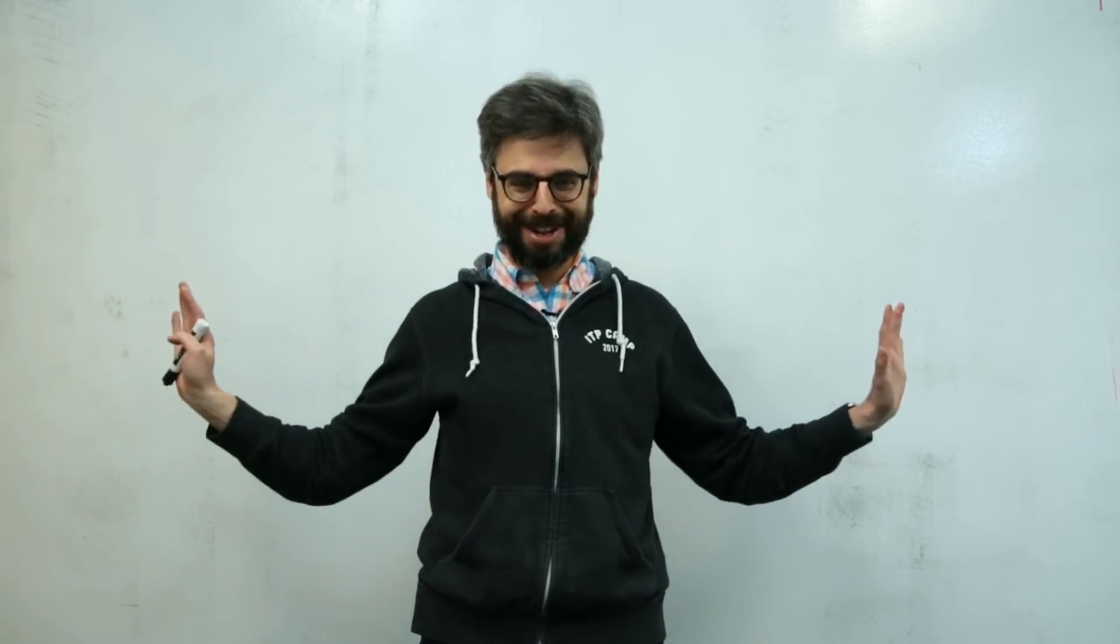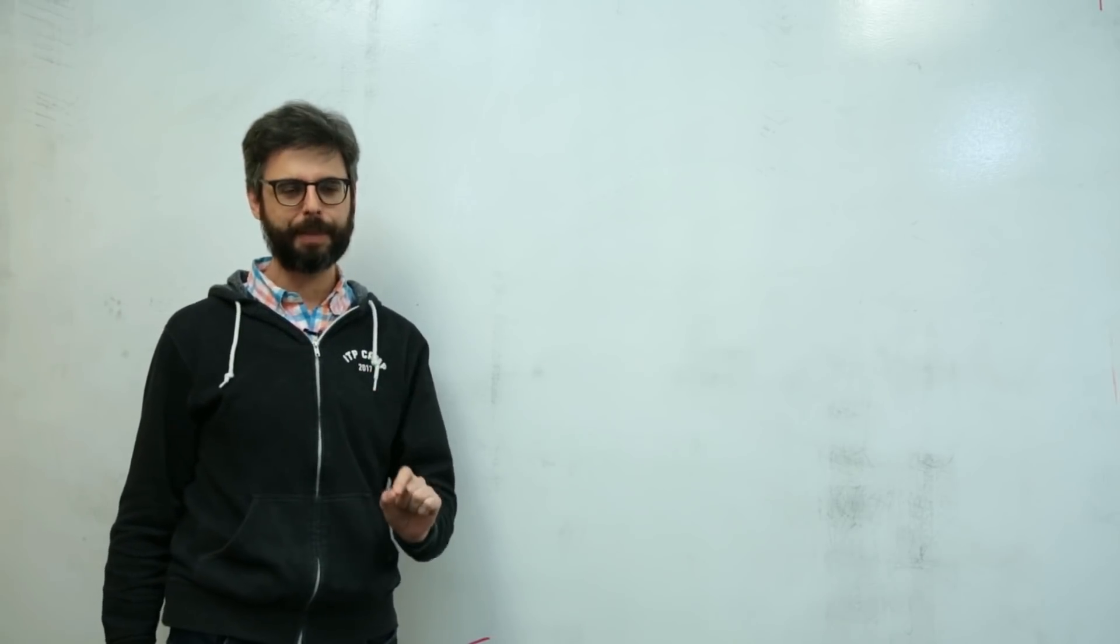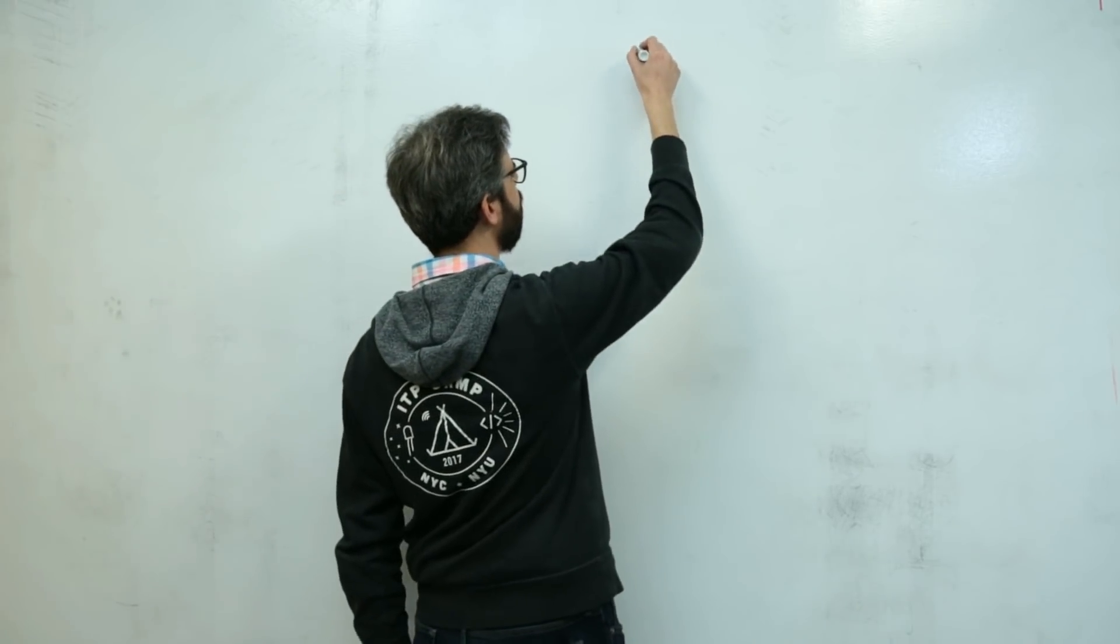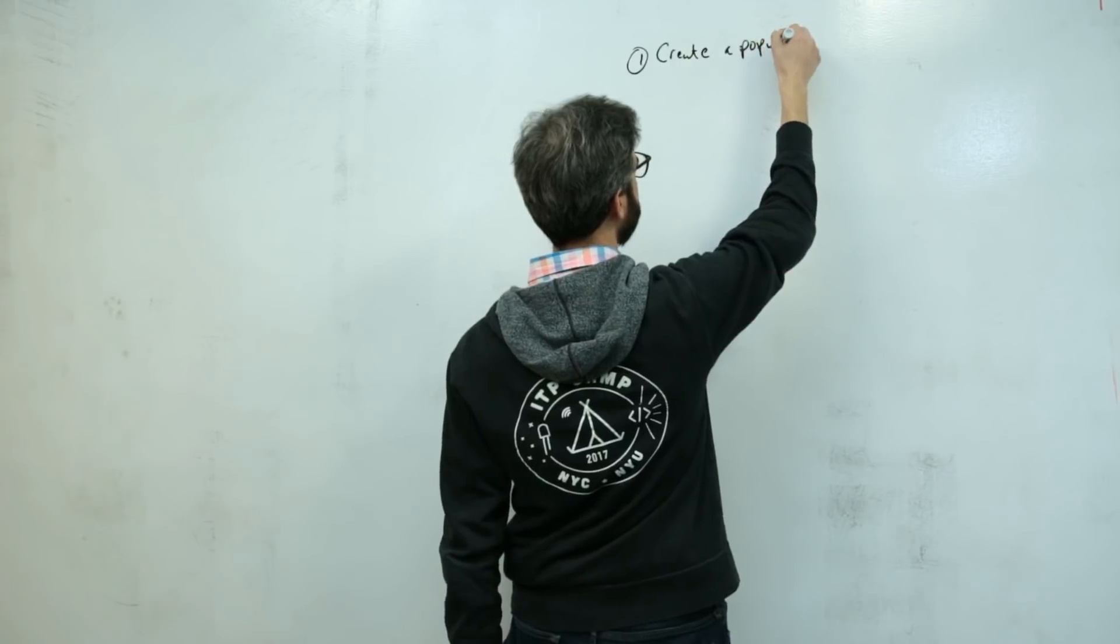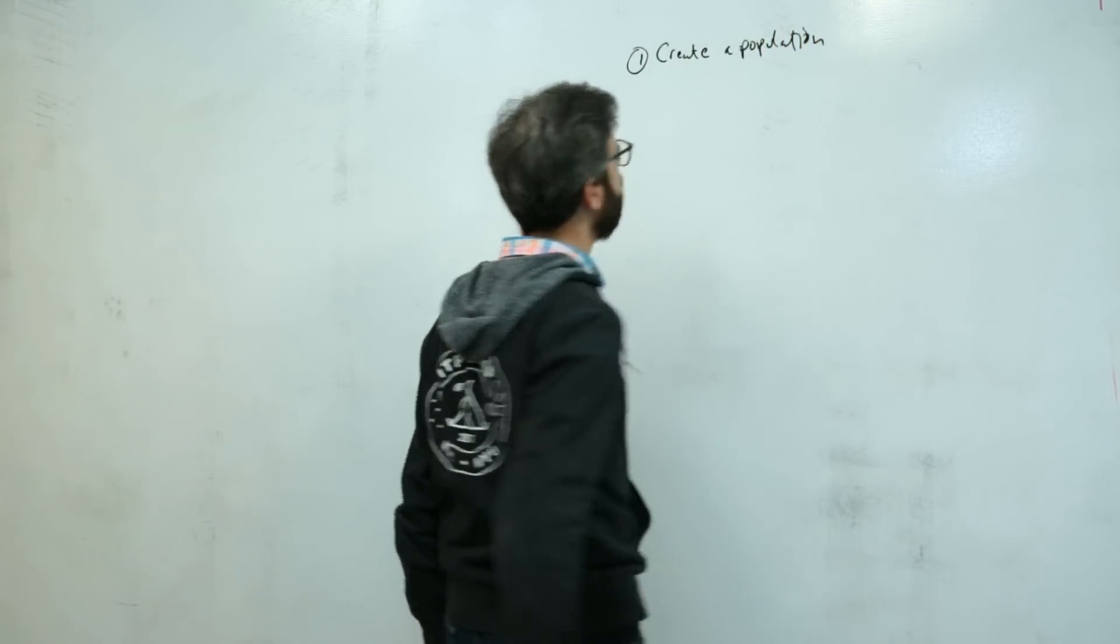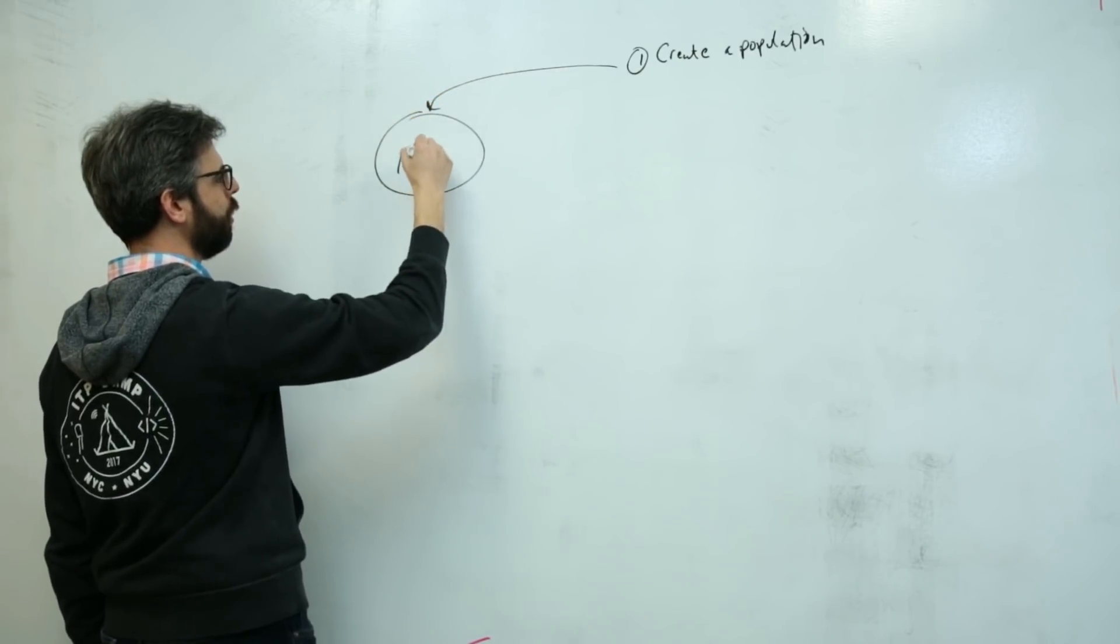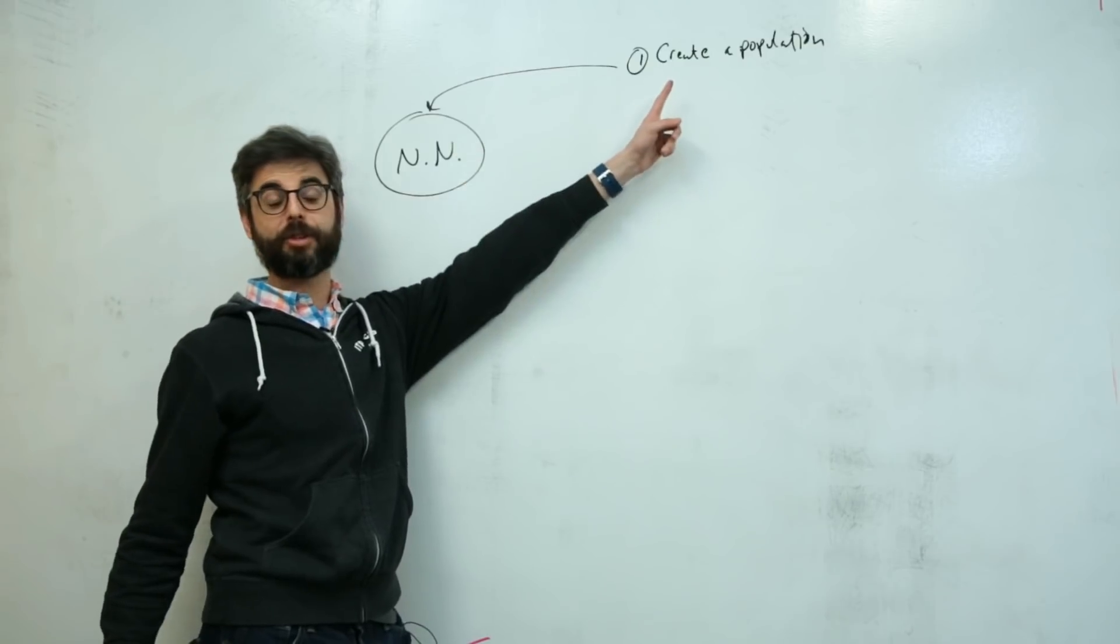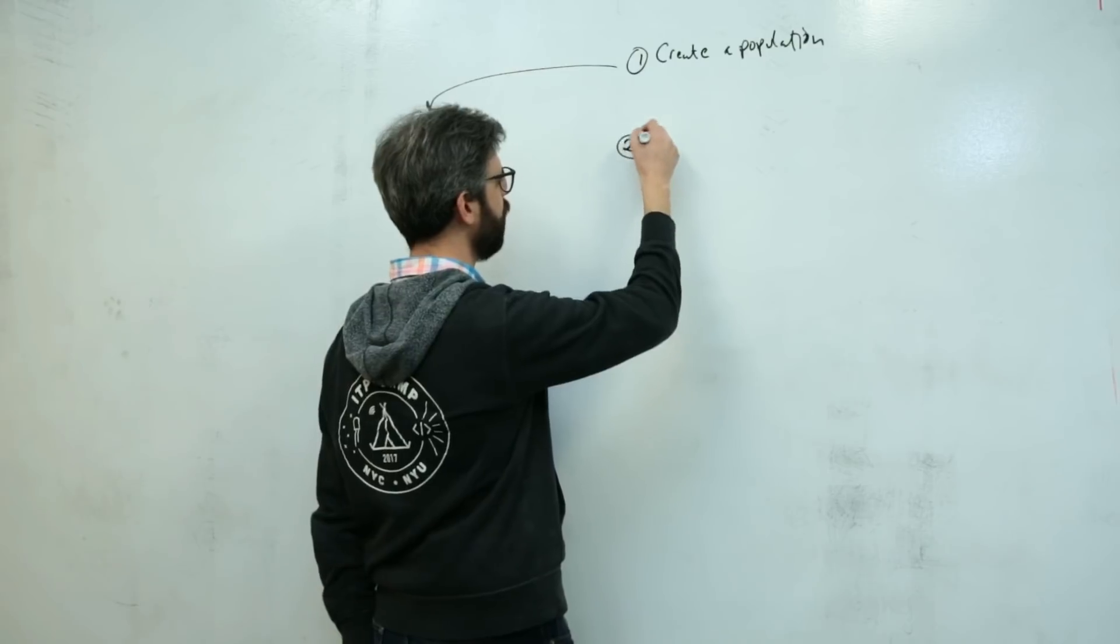Now that I have a blank whiteboard, let me review the steps of a genetic algorithm and think of them in the context of a neural network. First, I need to create a population, and the population is going to be a whole lot of neural networks. Maybe my population is 100 neural networks.